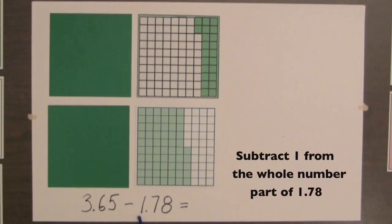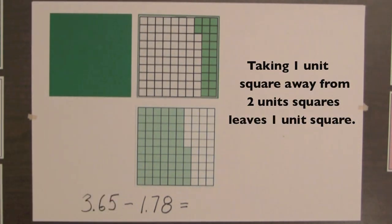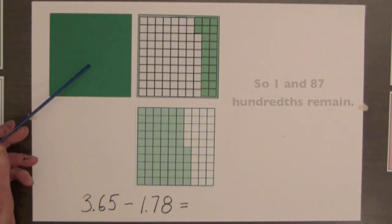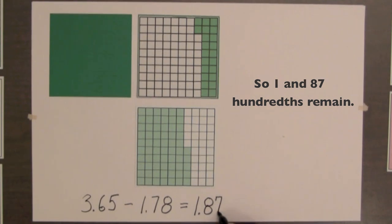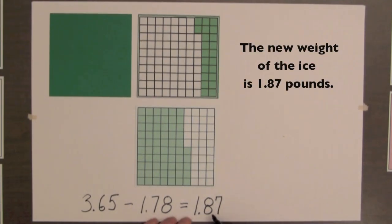Then to subtract the 1 in 1 and 78 hundredths, we remove 1 unit square. So 1 and 87 hundredths remain. So the new weight of the ice is 1 and 87 hundredths pounds.